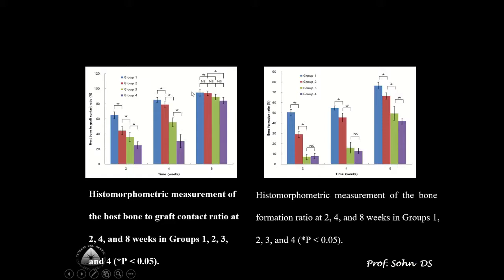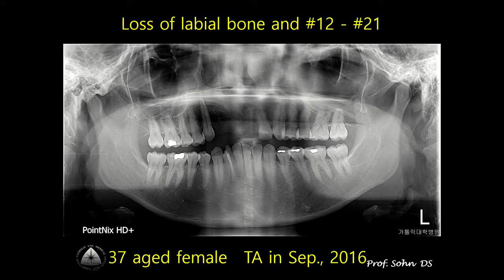This slide shows histomorphometric measurement of host bone-to-graft contact ratio and bone reformation ratio at 2, 4, and 8 weeks in all four groups. Demineralized and microperforated dentin block induced the fastest and highest bone formation compared to any other dentin blocks. As an alternative to autogenous or allogeneic block bone graft, demineralized and microperforated dentin block bone can be recommended as a block bone graft according to this study.